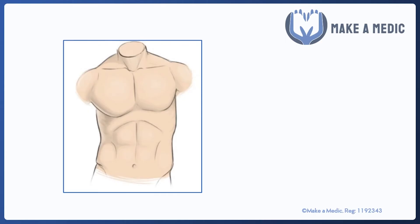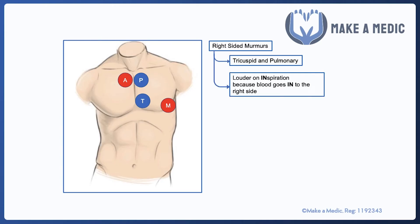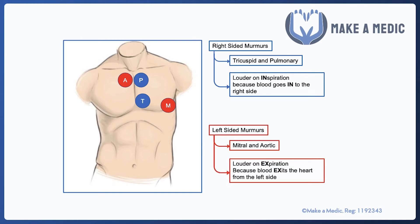Another helpful piece of information when trying to figure out which valve abnormality is causing a murmur is to think about where the murmur is heard loudest and whether it is worse on inspiration or expiration. The areas in which certain murmurs are heard loudest can be remembered using the APTM schematic — aortic, pulmonary, tricuspid, and mitral in that order. Right-sided murmurs — tricuspid and pulmonary — are heard louder on inspiration; a useful way to remember this is that the right side of the heart is where blood goes in, and inspiration makes these louder. Left-sided murmurs are loudest on expiration, because that's where blood exits the heart.